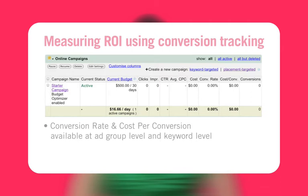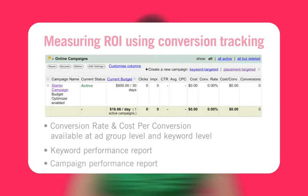To track the ROI for each of your keywords, ad groups or campaigns, you can run a keyword performance report or campaign performance report.